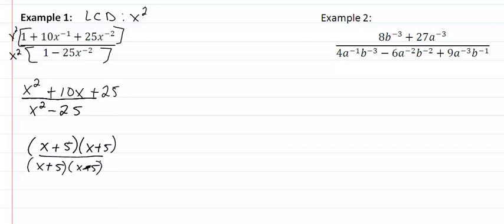Take out the common factor, we get x plus 5 all over x minus 5.